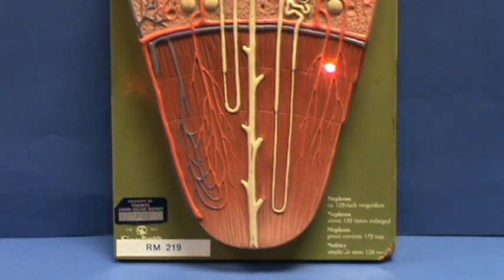In the pyramid, you can see these vessels, which are fairly straight, going down parallel to the collecting ducts and the loops of Henle.